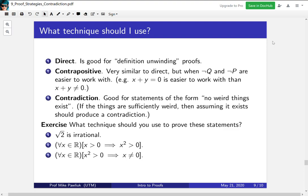For the first one, I would use proof by contradiction. A number is rational if it's p over q for some integers p and q, and to be irrational is to say that thing doesn't exist. So if you're trying to prove that no weird things exist, you should maybe try contradiction.